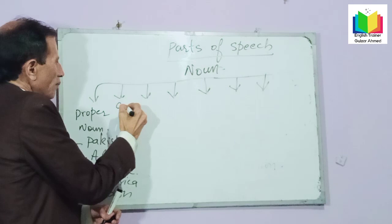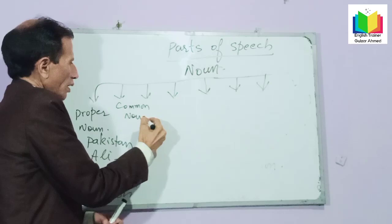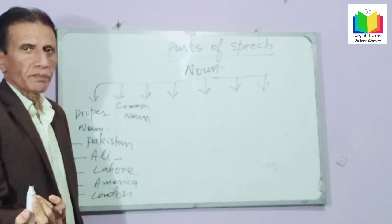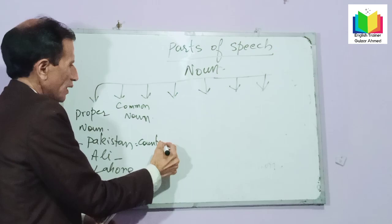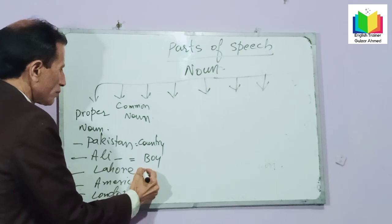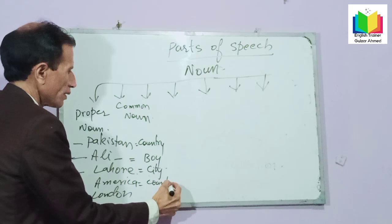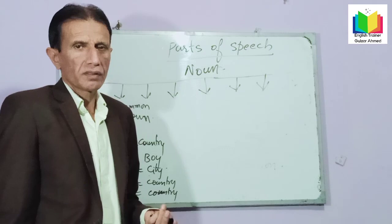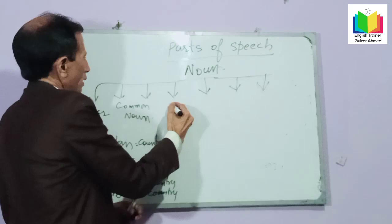Next: common noun. Common noun is the name of some ordinary things, persons, or places. For example, Pakistan is our country — 'country' is a common noun. Ali is a boy — 'boy' is a common noun. Lahore is a city — 'city' is a common noun. America is a country, London is a city. So these are common nouns. We can put an article before a common noun.